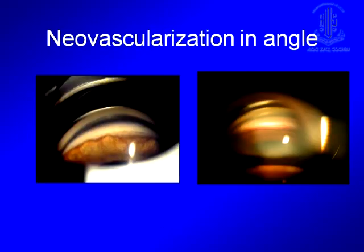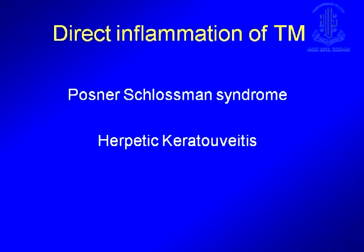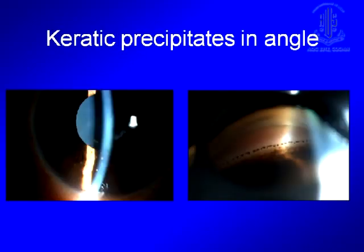Neovascularization of the iris is another possible reason for angle closure and this needs to be addressed — you would need to take care of the neovascularization before you do anything about the glaucoma. Direct inflammation of the trabecular meshwork with post-Fuch's or herpetic keratouveitis is another rare cause of glaucoma, and there you might see classic keratic precipitates in the angle. Once inflammation is controlled, these eyes usually do pretty well.